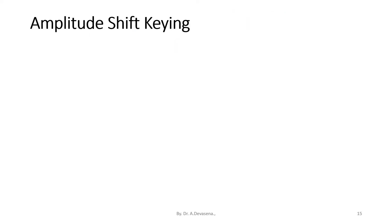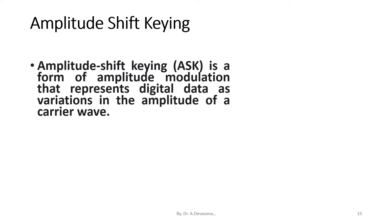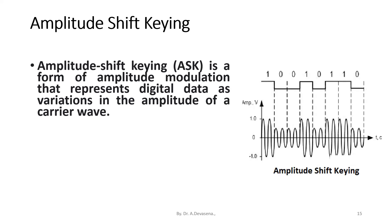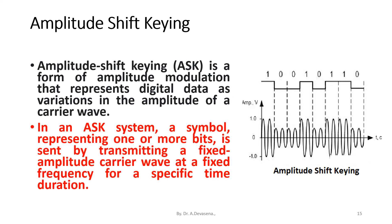Amplitude shift keying (ASK) is a form of amplitude modulation that represents digital data as variations in the amplitude of the carrier wave. Here is the representation of ASK. In an ASK system, a symbol representing one or more bits is sent by transmitting a fixed amplitude carrier wave at a fixed frequency for a specific time duration.